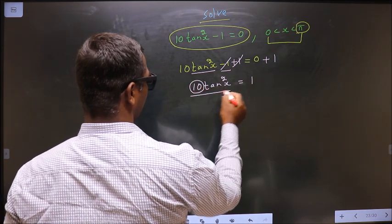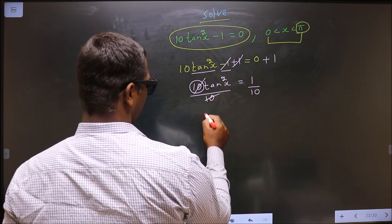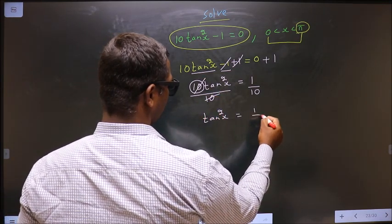Now to remove 10 you divide by 10. So we get tan²x = 1/10.